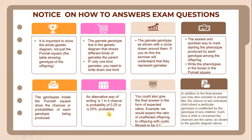You also have to provide the final answer in the form of an expected ratio. For example, we would expect the ratio of unaffected offspring to offspring with cystic fibrosis to be 3 to 1. Additionally, consider noting that the chance of any individual child inheriting a particular genotype is unaffected by the genotype of any other children. Each time a child is conceived, the chances are the same as shown in the genetic diagram.